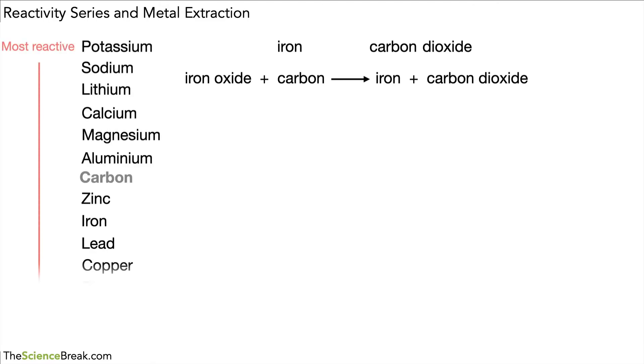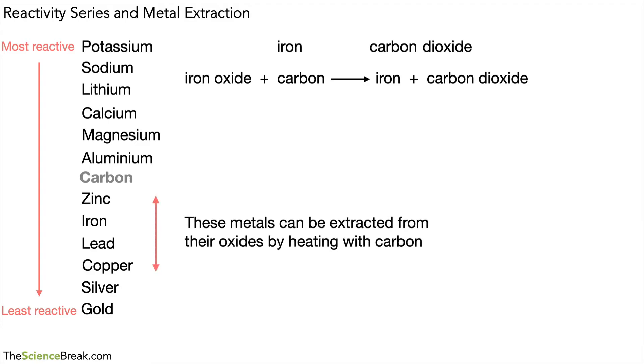If we add our reactivity series back again we can see that the metals that are below carbon in this list, these ones here, these metals can be extracted from their oxides by heating with carbon. So we can extract these metals from their oxides by heating with carbon because the carbon is more reactive than these metals.